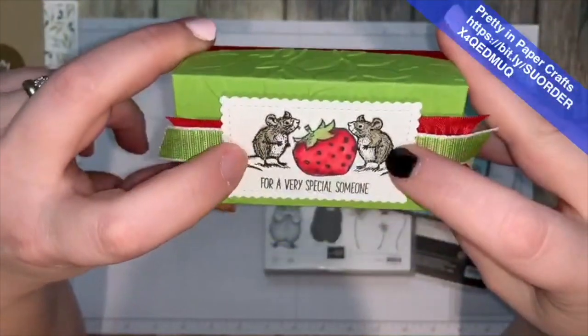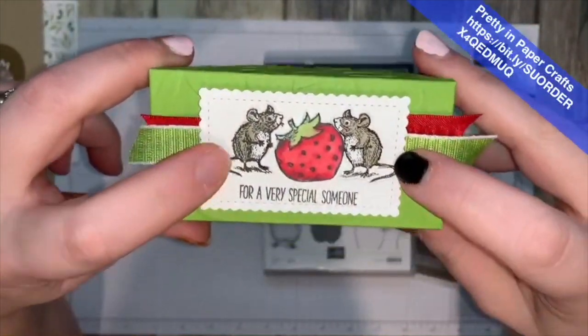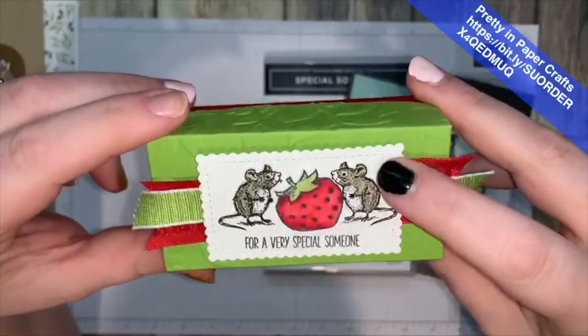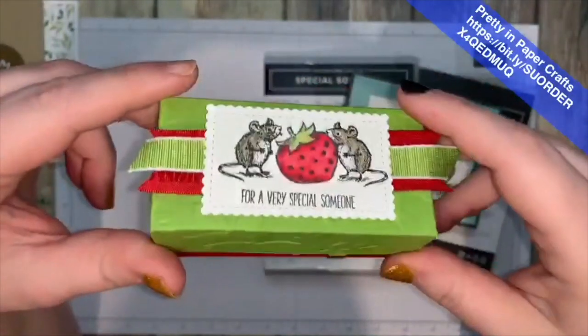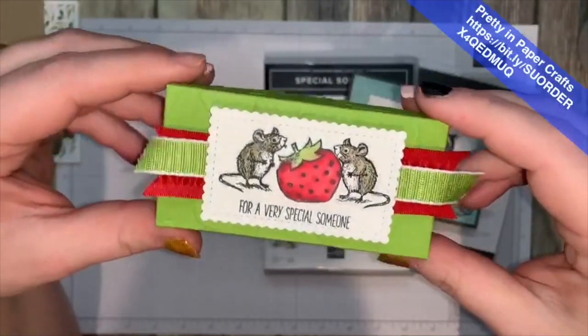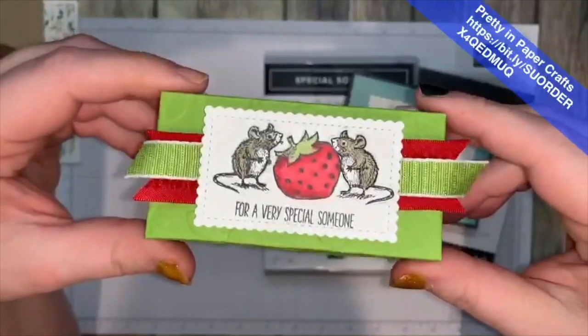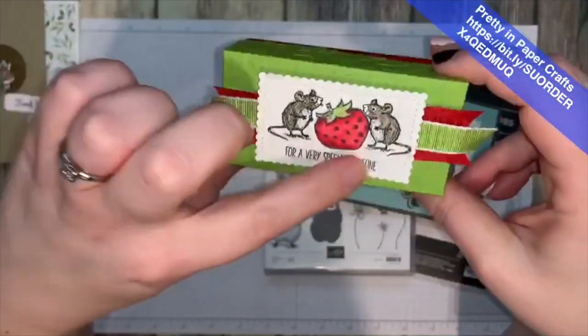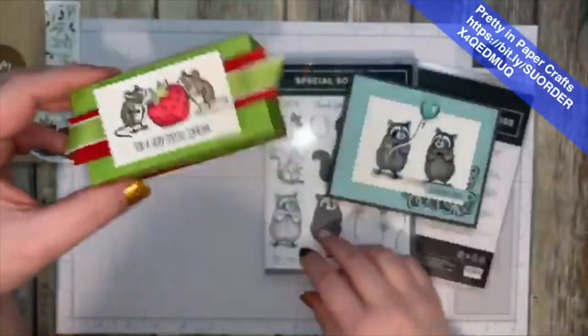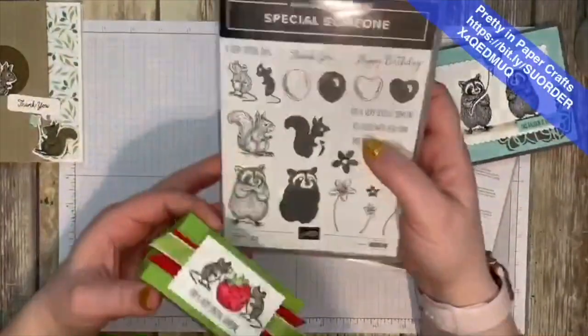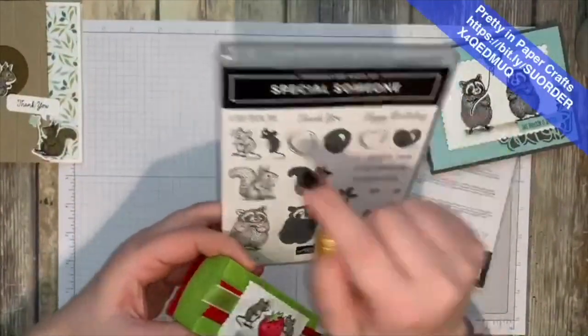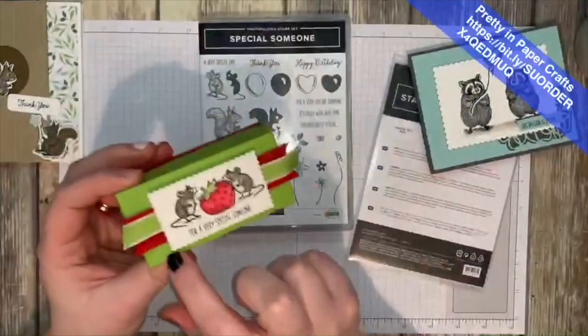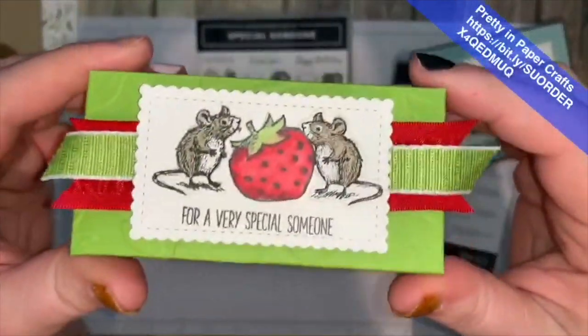All right, this little cutie is a little strawberry treat and I'll show you what's inside here in a minute. But, you guys, the little mouse reminds me of that storybook, you know, with the mouse and the bear and the berry. But, anyways, this is a cute little box that I made with our little mice friends. And it says, for a very special someone.